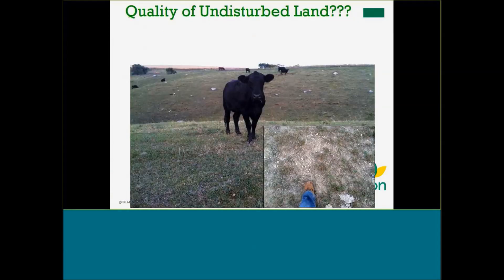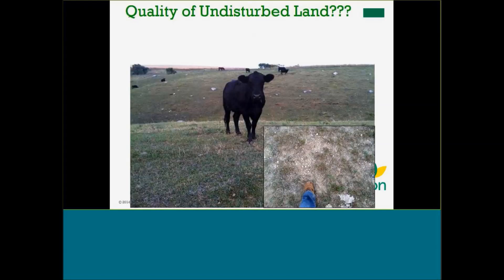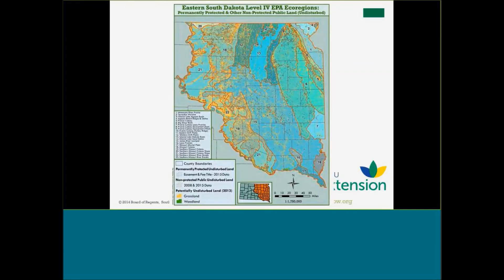It's important to remember that we're not doing a quality assessment here. We can't tell you the quality of lands that fall into the native or undisturbed category. But because this is all GIS-based, it opens up further analysis possibilities.